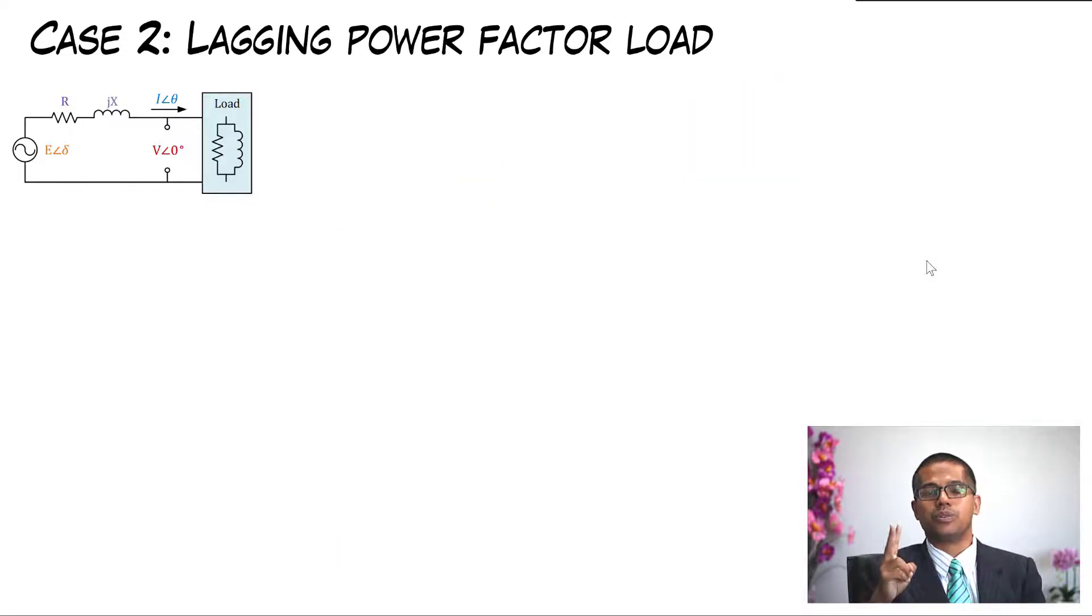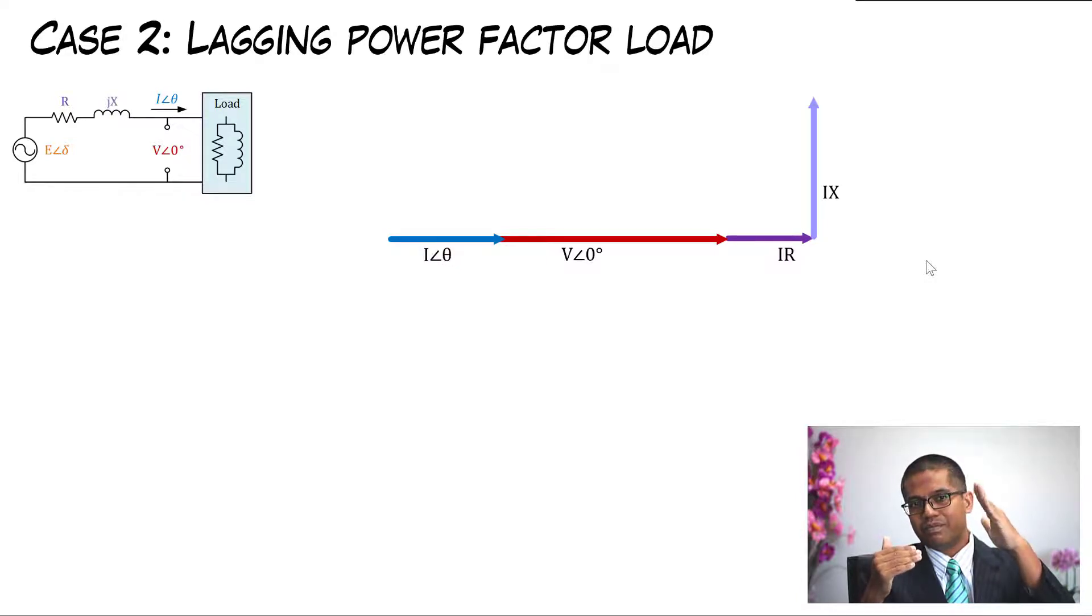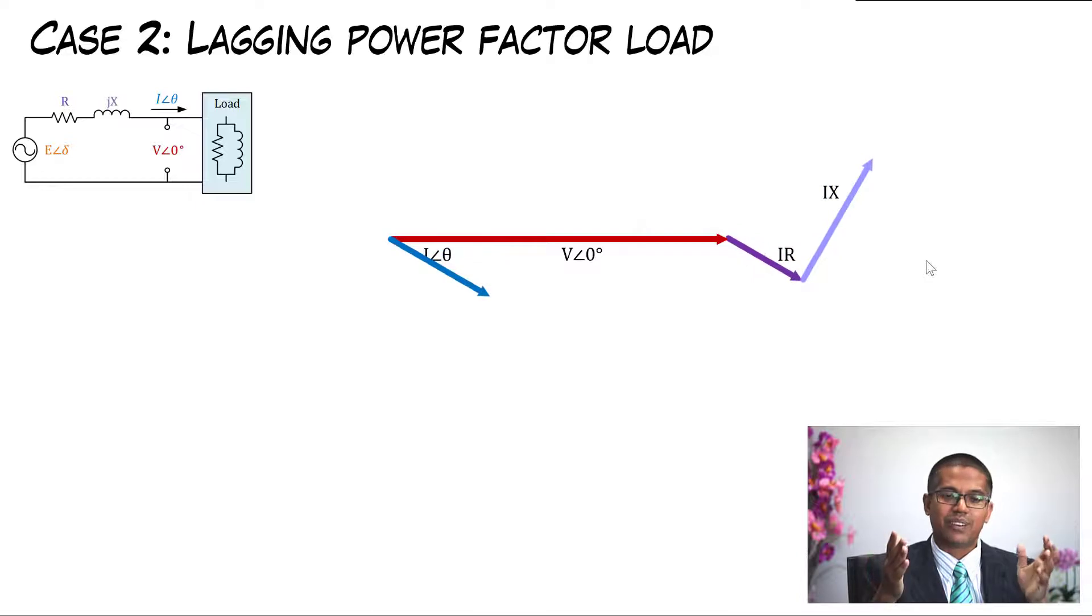Case number two: lagging power factor load. So where is lagging power factor? Do you think the current will go up or will it go down? In this case, you're correct, current is going down. And because current is going down, the IR is going down as well. And as I mentioned before, IX or IjX is always perpendicular with IR.